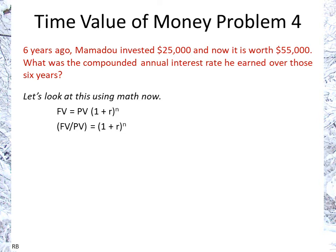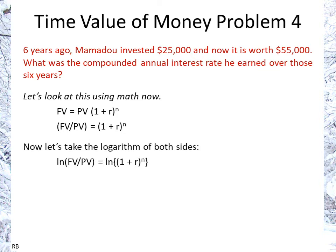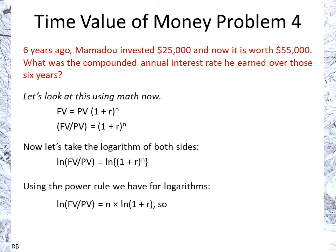Here r, or i, is the interest rate, and n is the number of periods. We then take the natural logarithm of both sides.